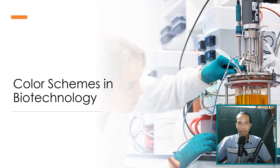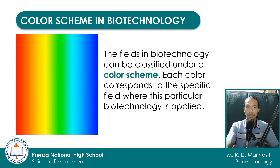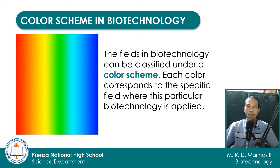Now that you are familiar with the difference between old and new biotechnology, you are now ready to learn more about the fields of biotechnology in the context of different color schemes. The fields in biotechnology can be classified under a color scheme, where each color corresponds to a specific field where that particular biotechnology is applied. We are going to see the different activities for red, green, white, blue, and yellow biotechnology.